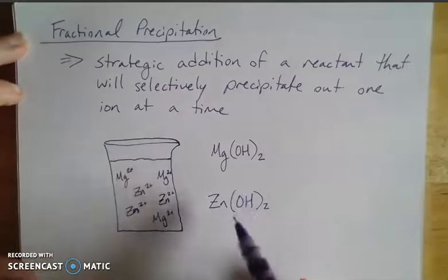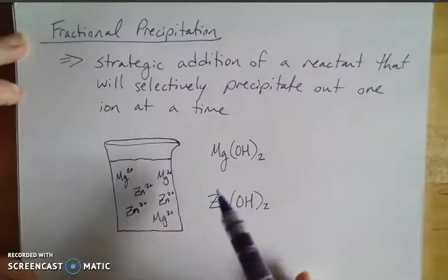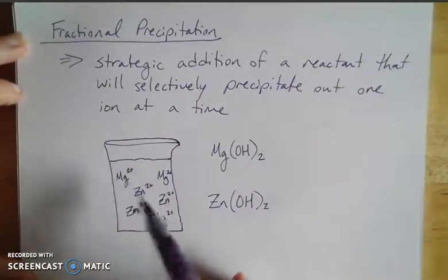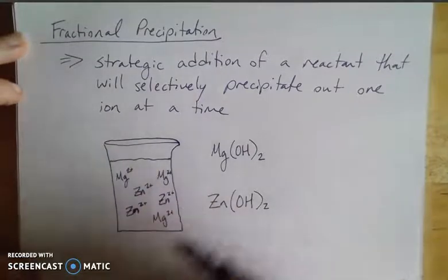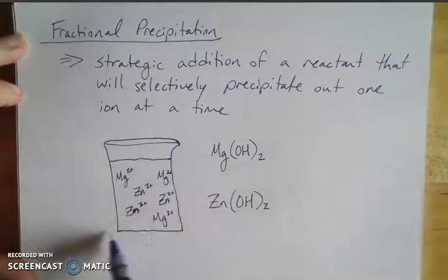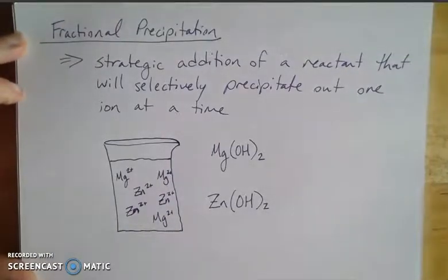then if I know certain things about the compounds that can form for each of these ions, then I could potentially precipitate one set of ions out at a time. So I only have two here in my system, but you could use this for a number of different ions.